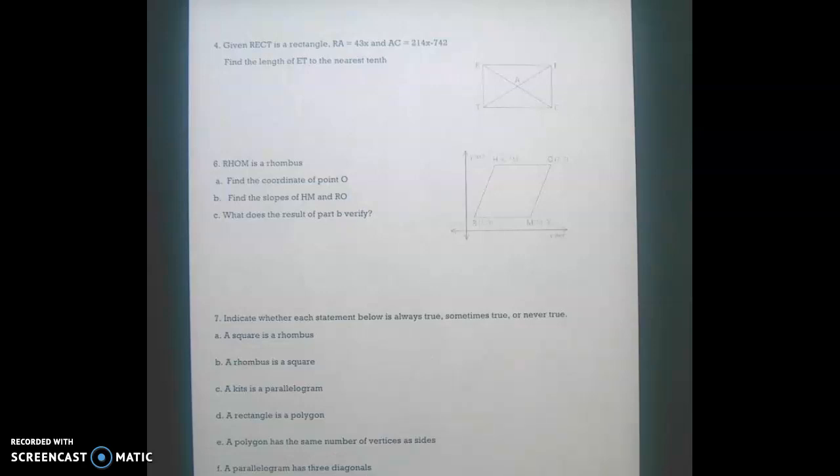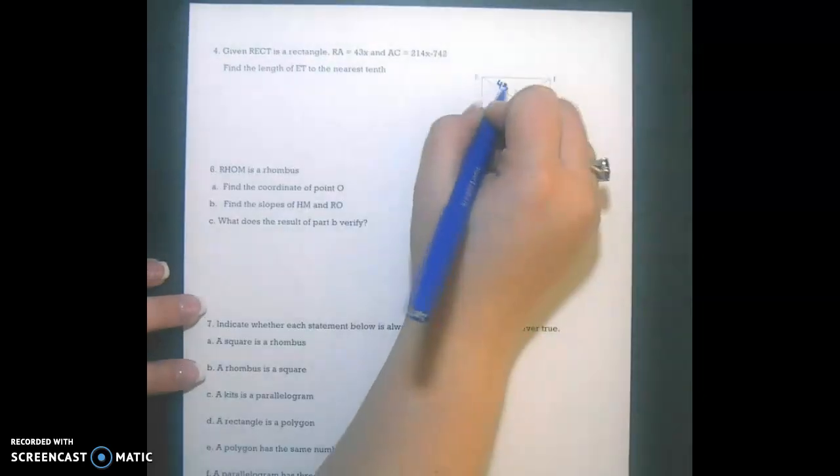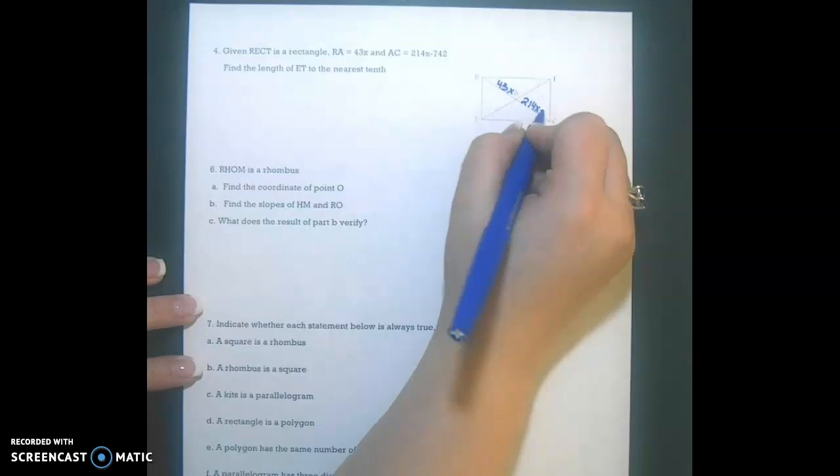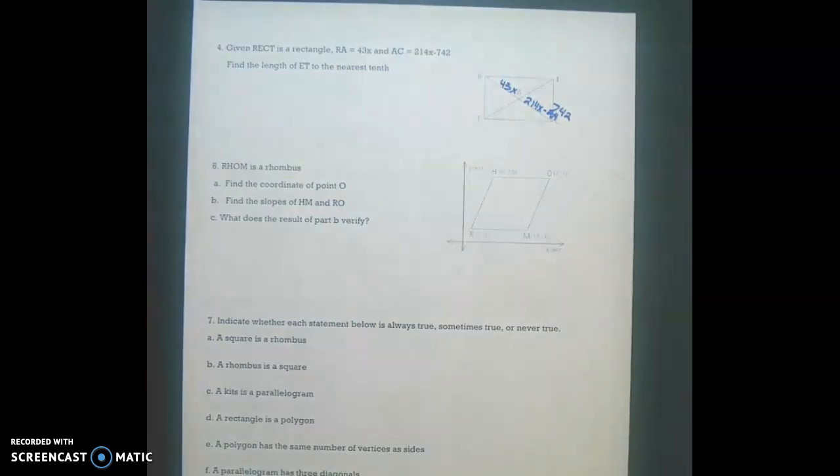Alright, picking up where we left off with practice problem number four, we are told that RECT is a rectangle, and we're told that RA is equal to 43X, and that AC is 214X minus 742. And we want to find the length of ET.